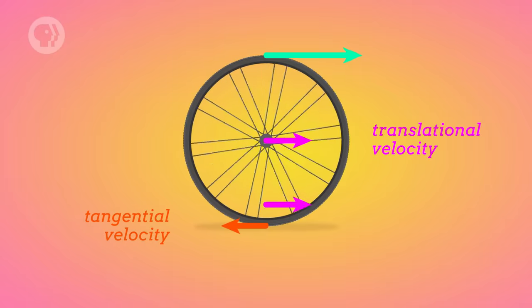And in the same way, the bottom of the wheel has the same translational velocity as the center of the wheel, minus the tangential velocity that comes from the wheel's rotation. Because at the bottom of the wheel, the tangential velocity is pointing opposite to the direction the wheel is rolling in.